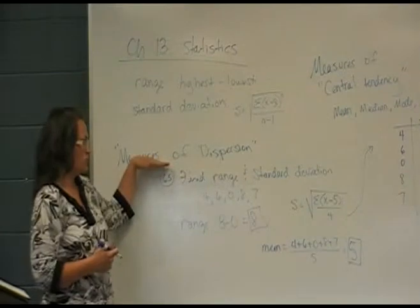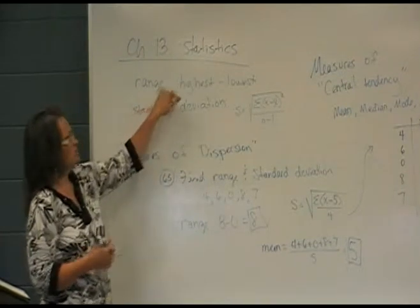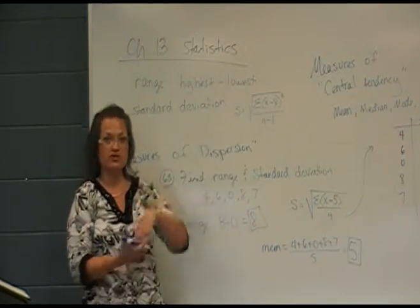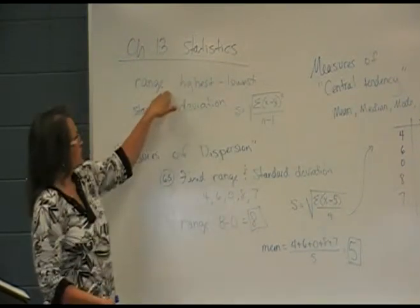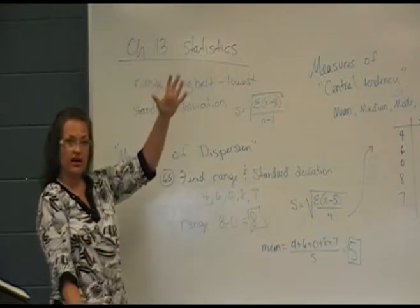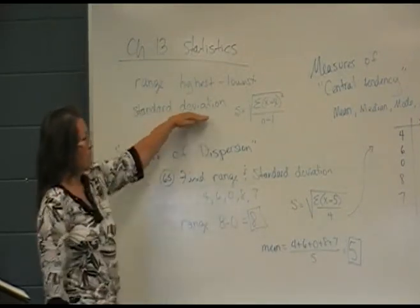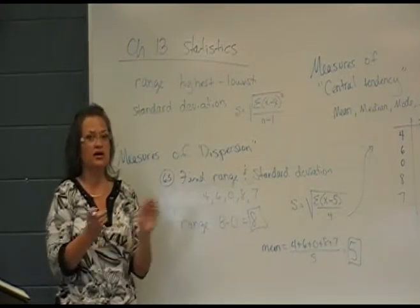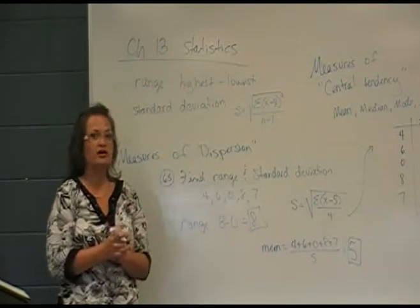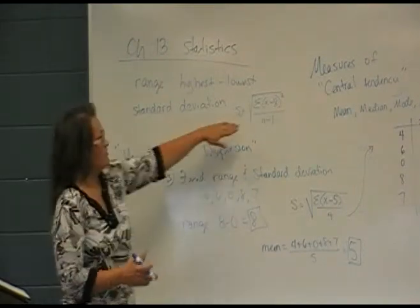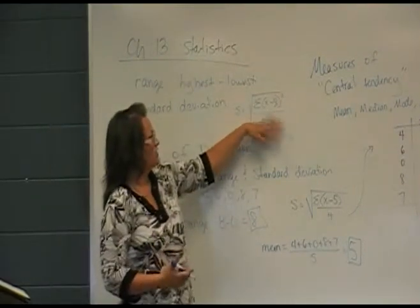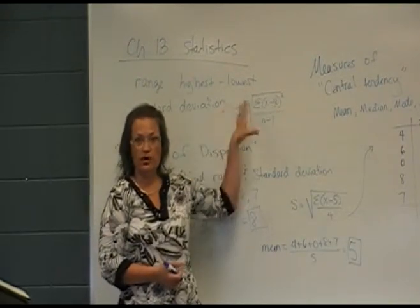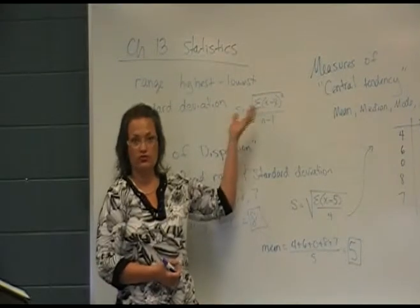The measures of dispersion that we study are range — which means highest to lowest, just subtracting the highest and lowest values — and standard deviation, which is a more specific measure showing how close every value is to the mean. We have a formula for that; it's a little more involved. You won't have to memorize this formula, but you do need to know how to apply it. If you have this question on your final, the formula would be given.